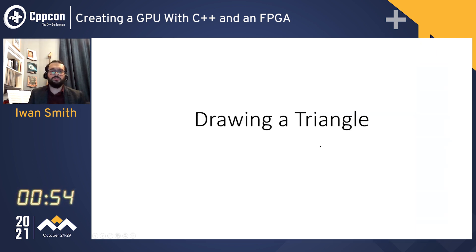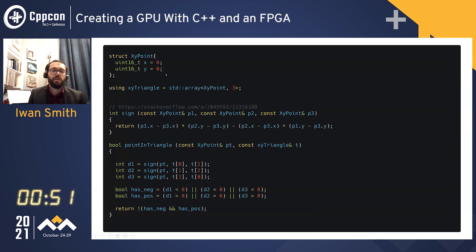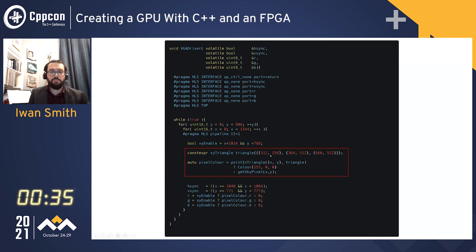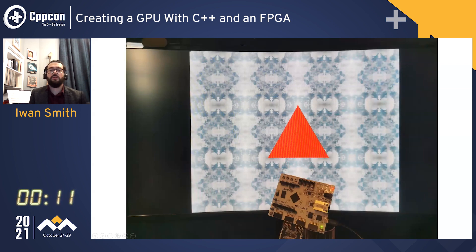But let's take this further and draw a triangle. We can define a point as X and Y coordinates in a struct, and then define a triangle as three points. Then we just need to use some code that uses barycentric coordinates to determine if a given point is inside a given triangle. We then make some more changes to our main loop: we define a triangle with three coordinates, and then to get the pixel color, we ask if the point is inside this triangle, getting X and Y from the initial for loop. If it is inside the triangle, we set this point to red; if it's outside, we set it to the sky pixel. And if we run this through the tools, we have this nice red triangle on the sky background.